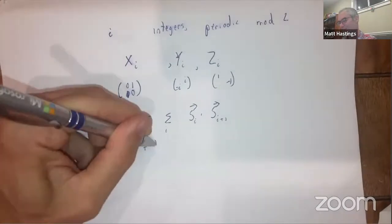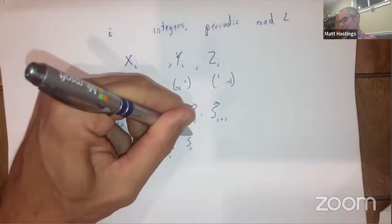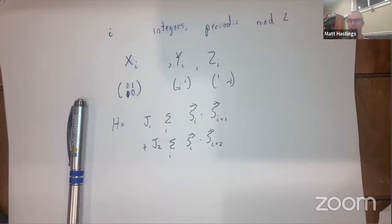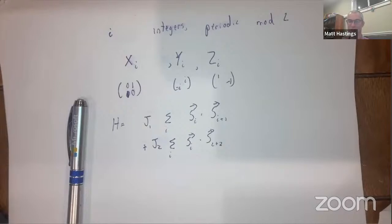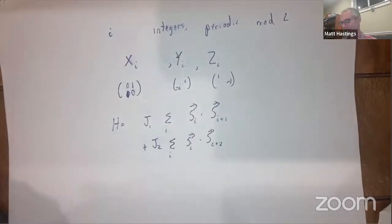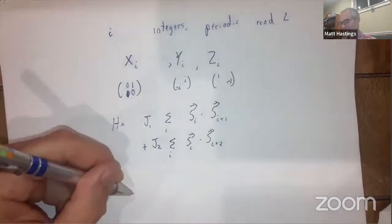We consider a Hamiltonian with two terms: J1 times the sum over i of S_i dot S_{i+1}, where S_i dot S_{i+1} is shorthand for X_i X_{i+1} + Y_i Y_{i+1} + Z_i Z_{i+1}, plus J2 times the sum over i of S_i dot S_{i+2}. The diameter of each interaction is only two, and the strength is set by |J1| or |J2|.